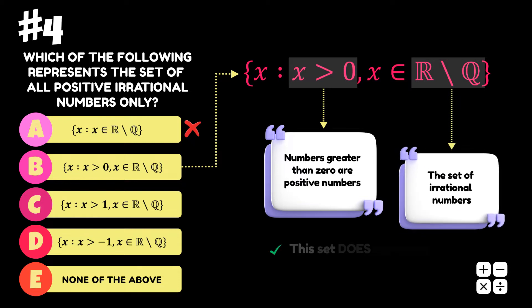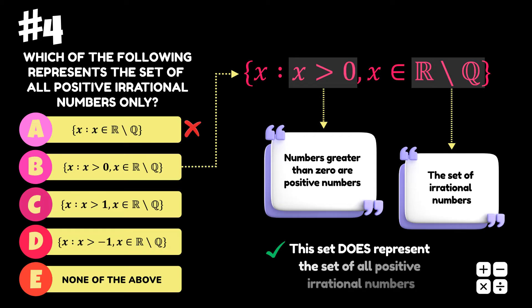Hence, this set does indeed represent the set of all positive irrational numbers. So Option B is correct.